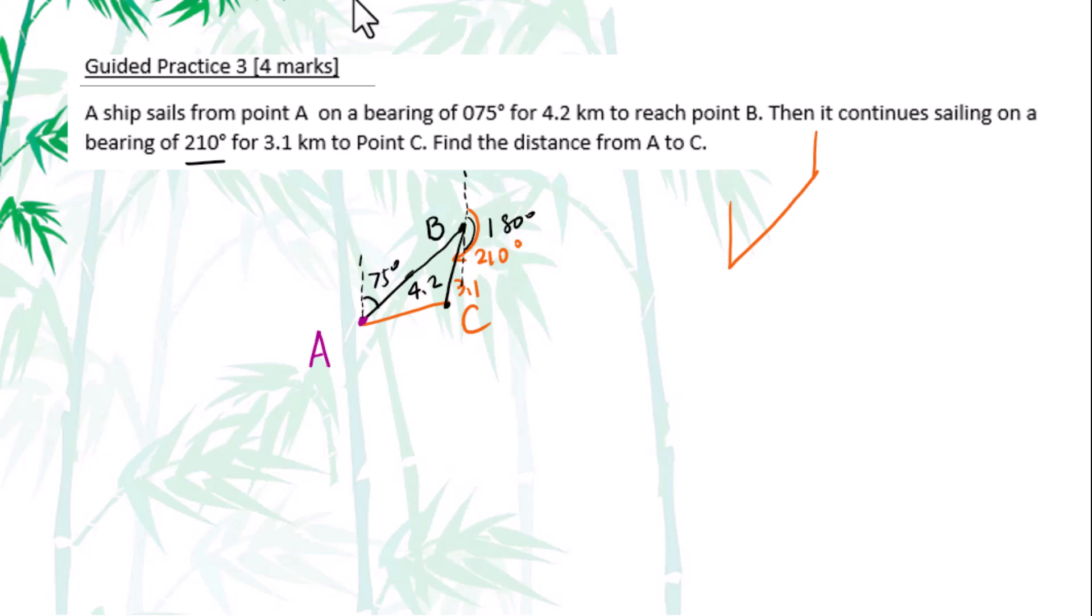For bearing angles, we got to use consecutive interior angles a lot. Angle theta, angle alpha. Theta plus alpha equals 180º. This angle is 180º minus 75º equals 105º. Therefore, for angle ABC equals 360º minus 105º minus 210º equals 45º.